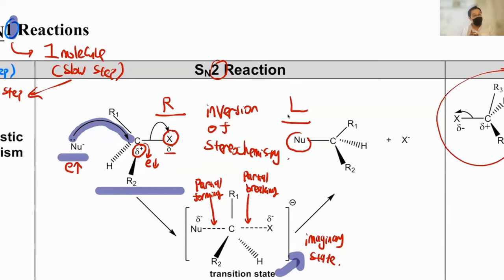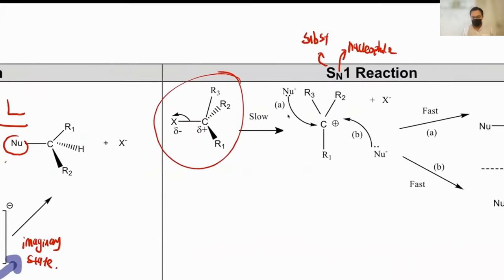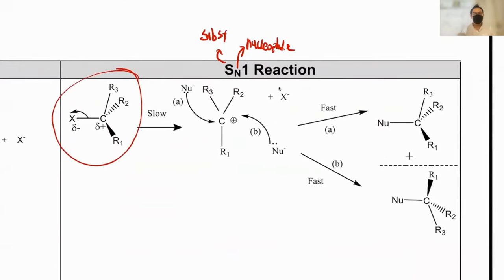Now let's take a look at SN1. So what's the difference in SN1 then? Now SN1 is a bit different. SN1 instead of two molecules now become one molecule. So these CX bonds just break by itself.